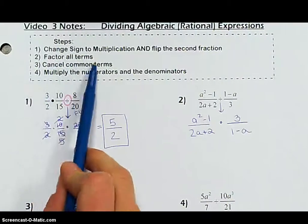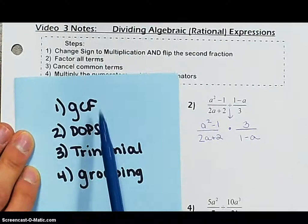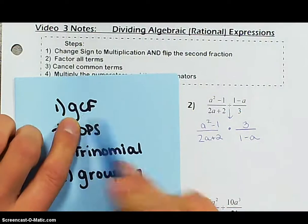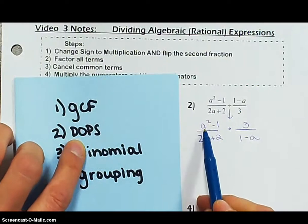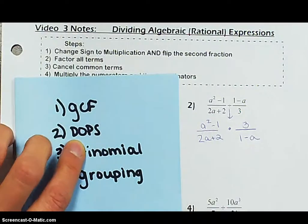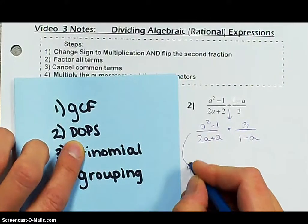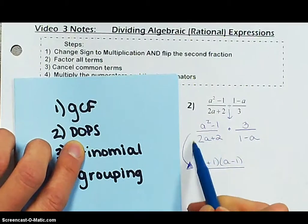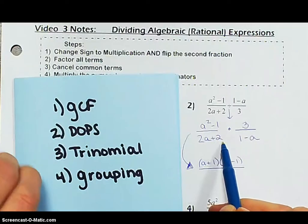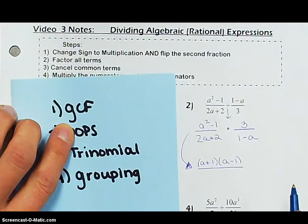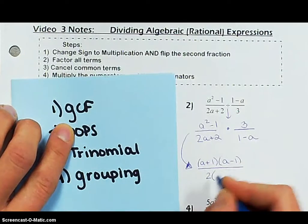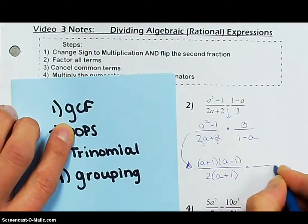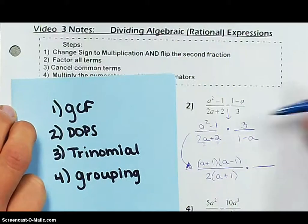Step 2, we need to factor all of our terms. Looking at a squared minus 1 — is there a GCF? No. Can we use difference of perfect squares? Yes. a squared is a perfect square, 1 is a perfect square, and it is subtraction. So this becomes (a + 1)(a − 1) all over. For the denominator, 2a plus 2 — is there a GCF? Yes, the GCF is 2. We put the 2 on the outside, dividing both by 2, giving us 2(a + 1). For the second fraction, 3 is a monomial so it stays 3.